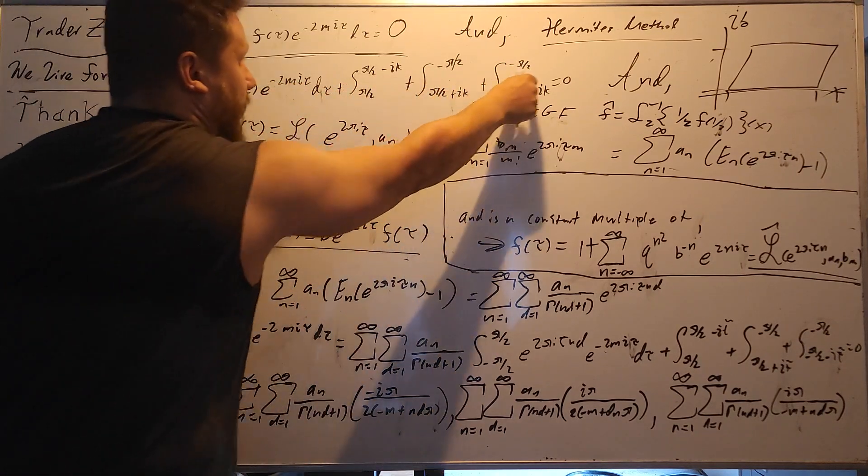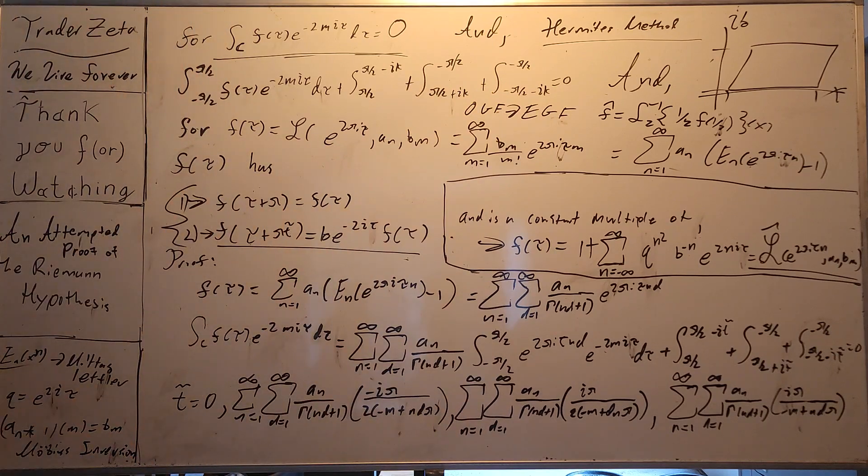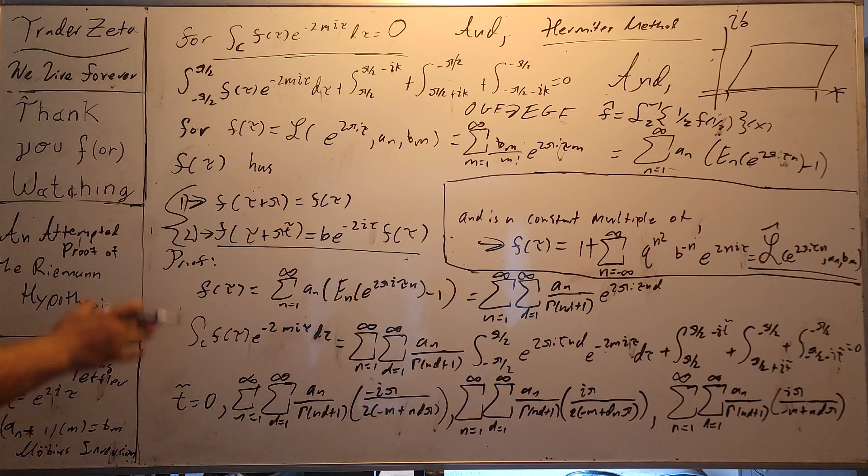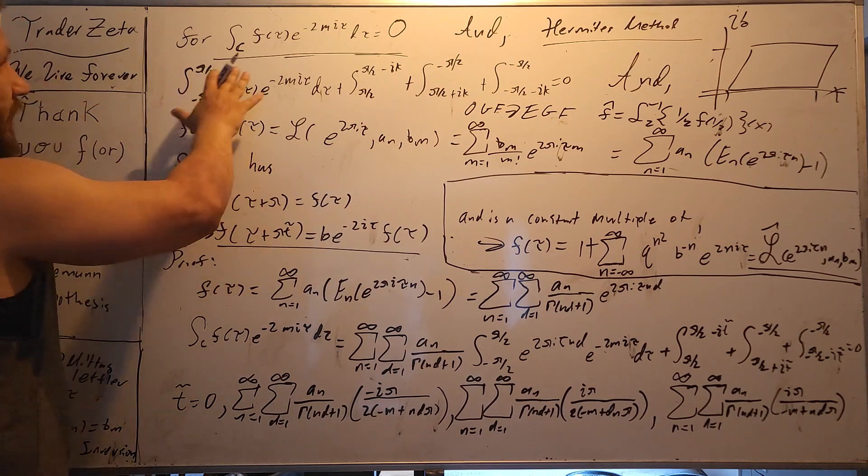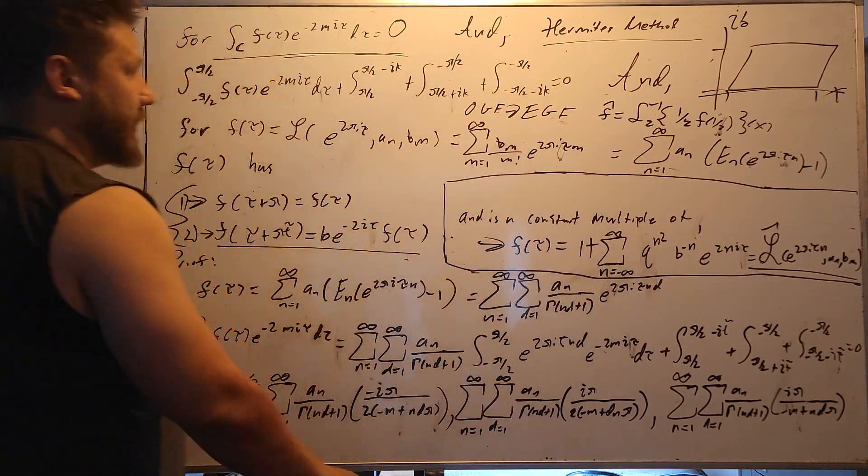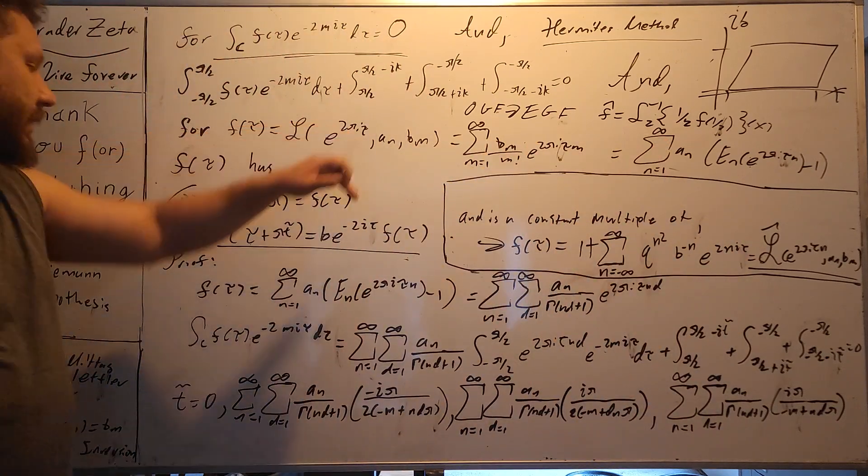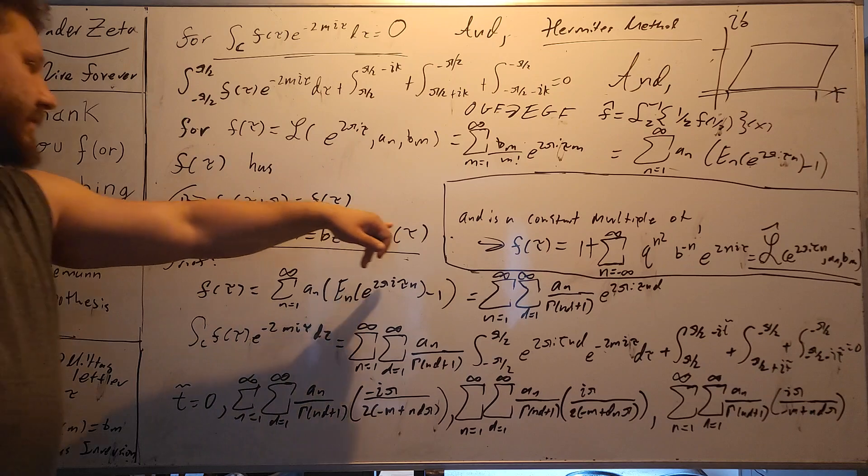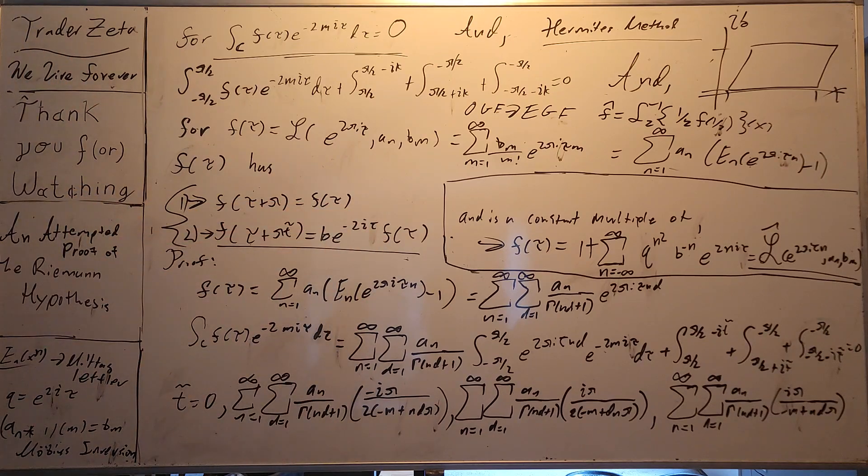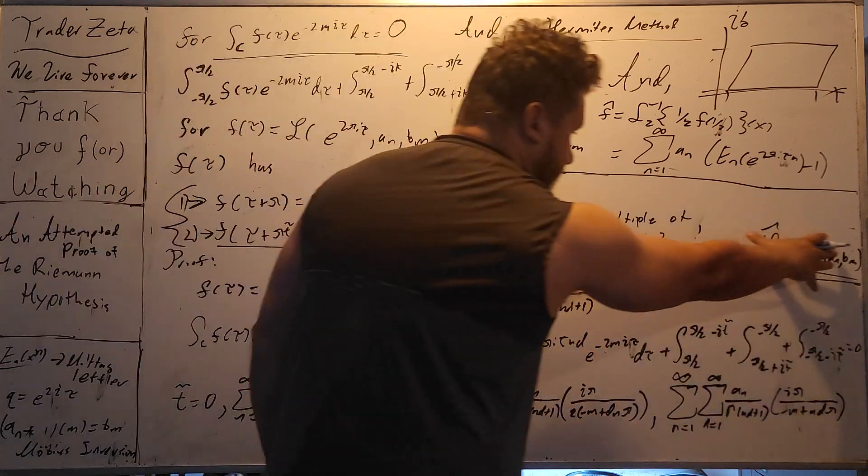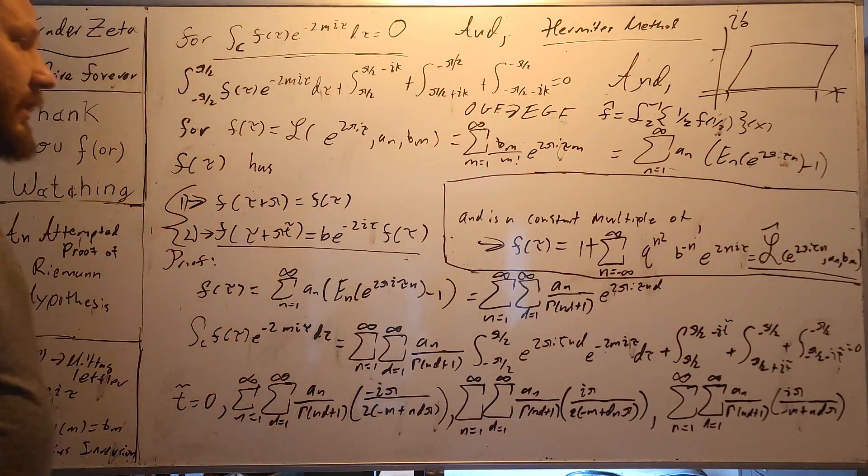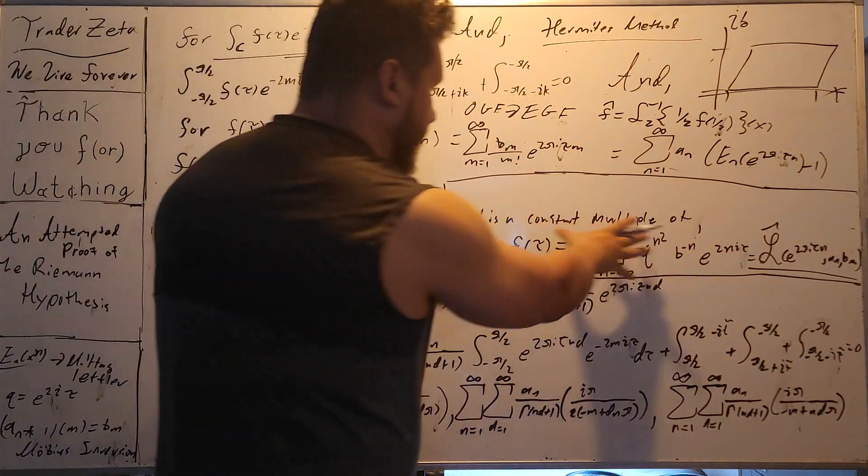Very nice. So if we can do our contour integration on our ELS, with the e to the 2 pi i, we can show that it obeys this functional equation. Now, if it does obey this functional equation, f of tau has this representation, which is very closely related to the theta functions.